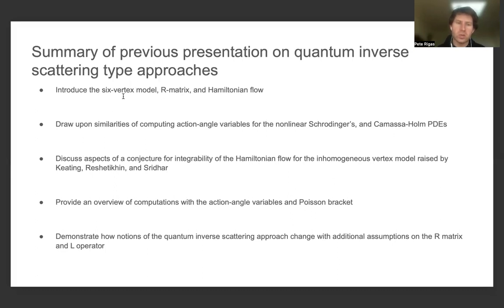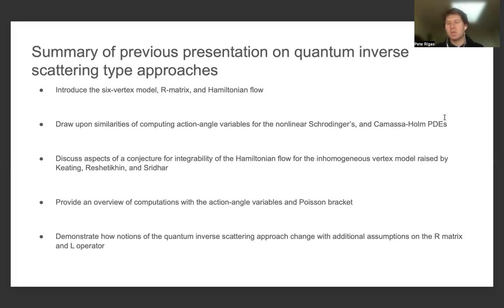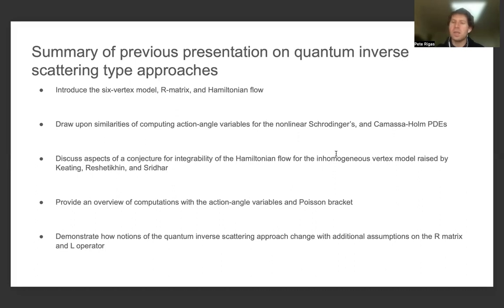We introduced the six-vertex model, the R matrix, and the Hamiltonian flow corresponding to the six-vertex model. To discuss quantum inverse scattering type approaches, we drew upon similarities of computing the action-angle variables for the nonlinear Schrödinger equation and the Camassa-Holm PDE. The Camassa-Holm PDE can be related to some of the techniques for the Hamiltonian method used for the nonlinear Schrödinger equation.